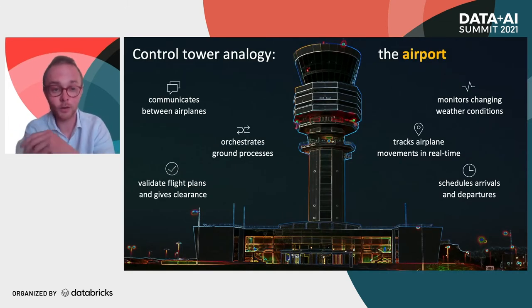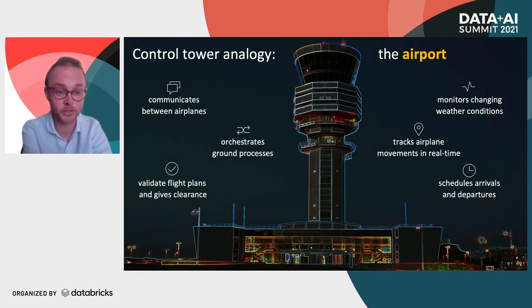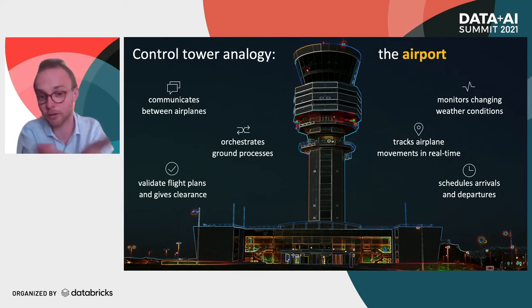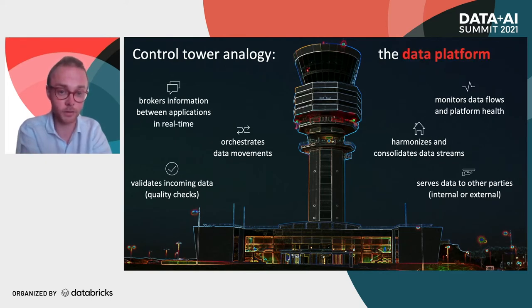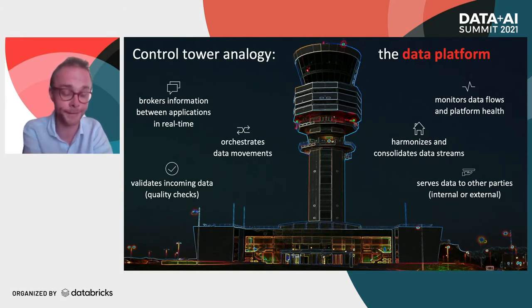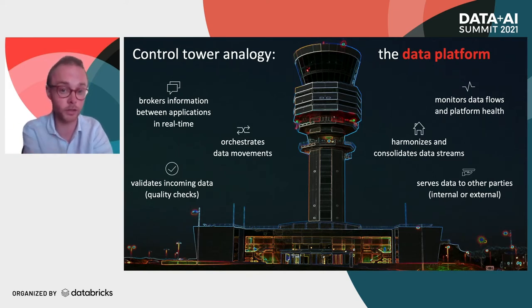The best way to explain what we have been doing is by comparing it to a control tower at an airport. A control tower enables communication between airplanes, orchestrates ground processes, validates flight plans, monitors various things, tracks airplane movements in real time, and schedules arrivals and departures. Similarly, a data platform is responsible for brokering information between applications — ideally in real time — orchestrating and validating data, monitoring platform and data flow health, harmonizing and consolidating data, and feeding data to other parties both internally and externally.